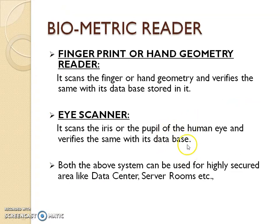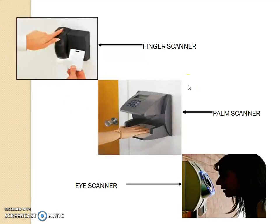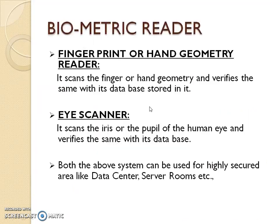In fingerprint or hand geometry readers, there are devices like a palm scanner where you have to keep your entire palm. Beyond that, there is an eye scanner. The eye scanner is the device which has the highest level of security. Eye scanners are very often installed in immigration facilities.